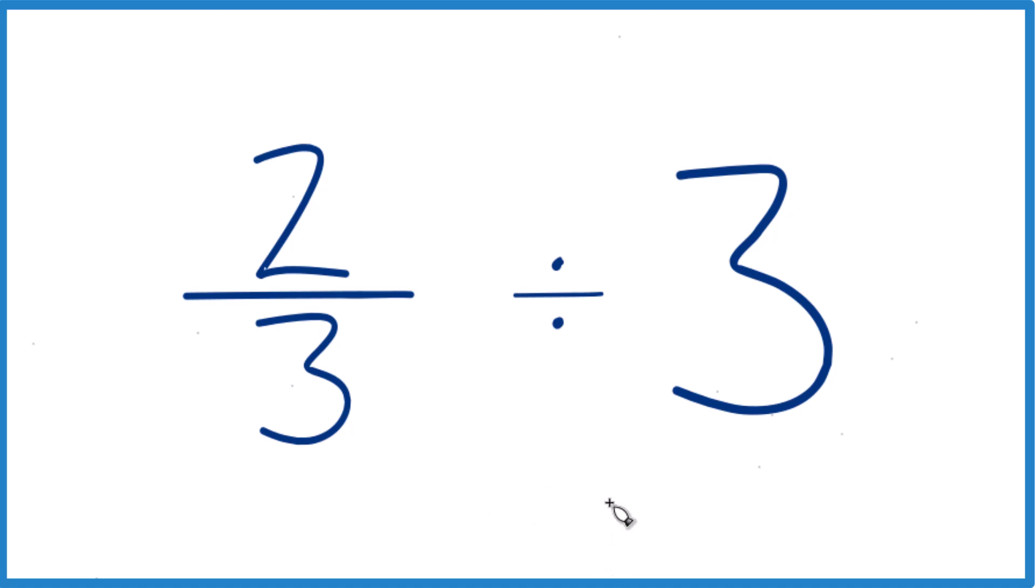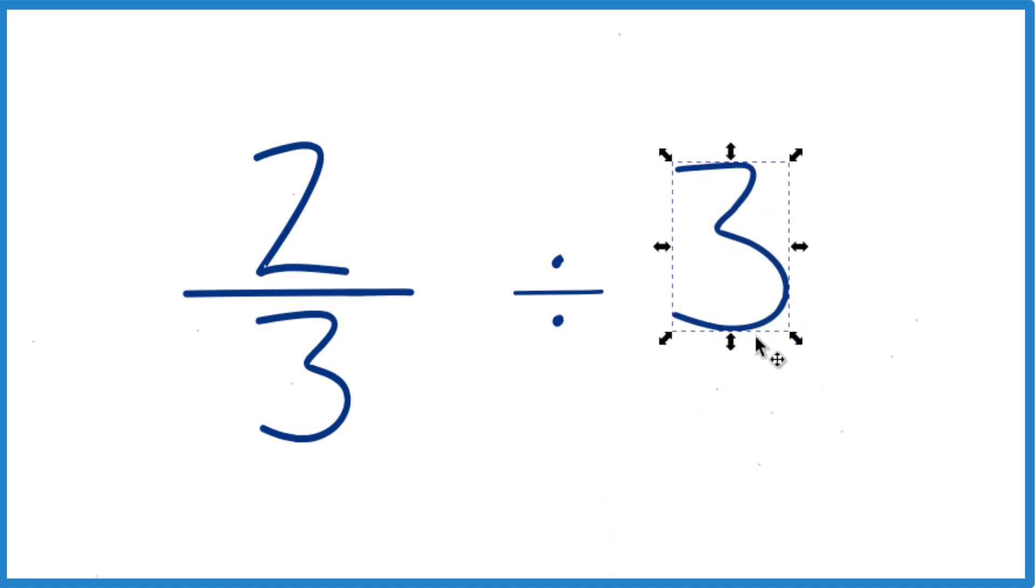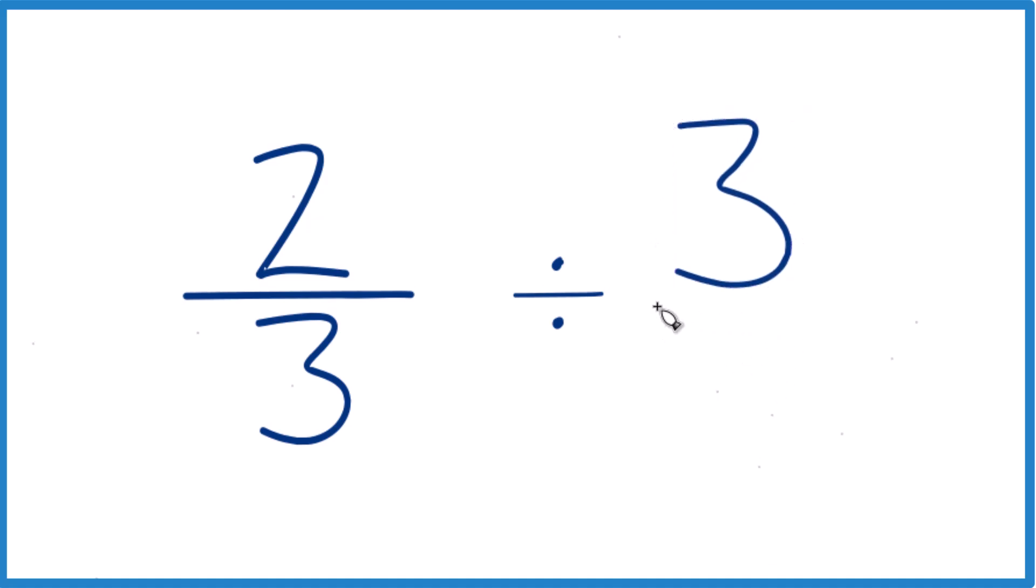And the way to do this is instead of three, let's call this three over one. Because three divided by one, it's still three, but now everything's kind of lined up.